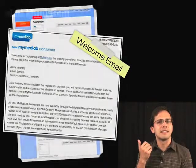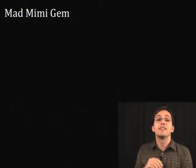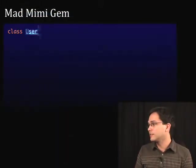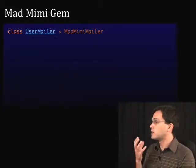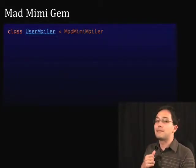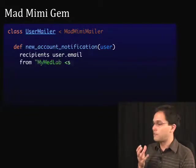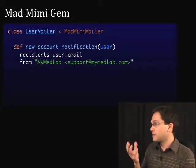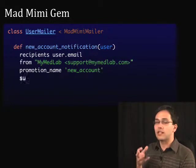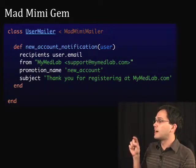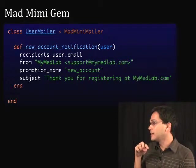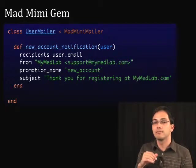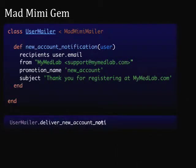So how do we get that to send inside of our Rails app? That's where the Mad Mimi gem comes in. The Mad Mimi gem allows us to write code that looks like this — here we've got our user mailer, and it inherits from MadMimiMailer instead of ActionMailer. We can specify recipients, the from, just like normal. Here's where we specify the promotion name — that's the name of the promotion inside Mad Mimi. And then we have the subject. To send this email, we simply call deliver_new_account_notification.